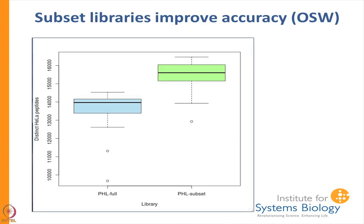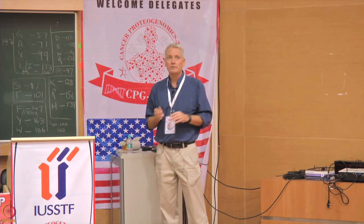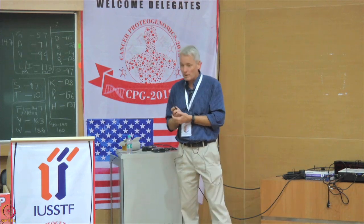Looking only at the HeLa background peptides — not the halo spike-in — with the original library we saw about 14,000 peptides on average, but with the focused library we saw over 16,000 on average. This is an indication that targeting your library is beneficial. Library resources are good, but you still have to do some focusing. It is good because you do not have to do all your own DDA, but it does require some customization. And I think that feeds in well with the proteogenomic theme.